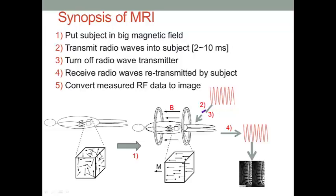This figure shows the synopsis of MRI. The basic idea is like this: we put the human body in a big magnetic field. B here is a big magnetic field. After that, we will transmit radio waves from outside into the human body.